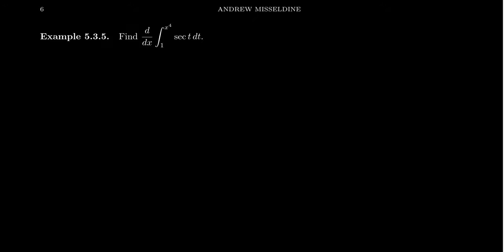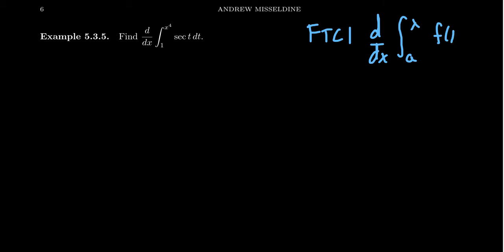Welcome back to lecture 46. We're talking about the Fundamental Theorem of Calculus Part 1, and I wanted to look at two more examples of using the Fundamental Theorem of Calculus Part 1 to help us calculate derivatives of integrals. The theorem tells us that if we take the derivative with respect to x of the integral from a to x of f(t) dt, this is simply equal to f(x).